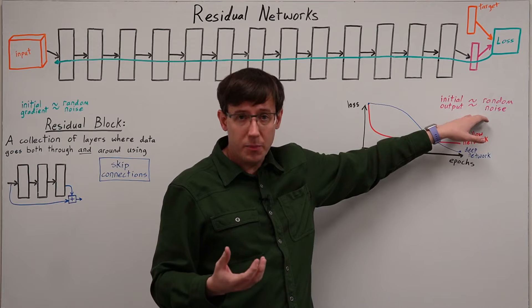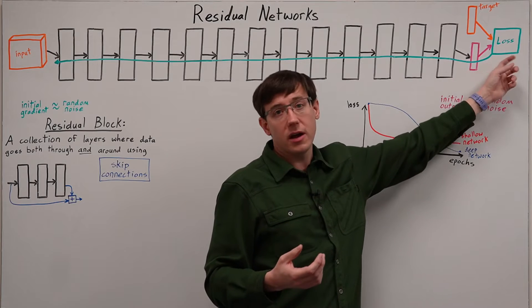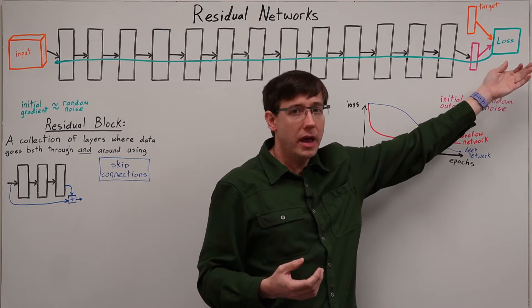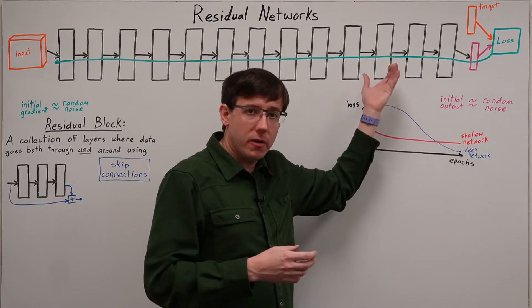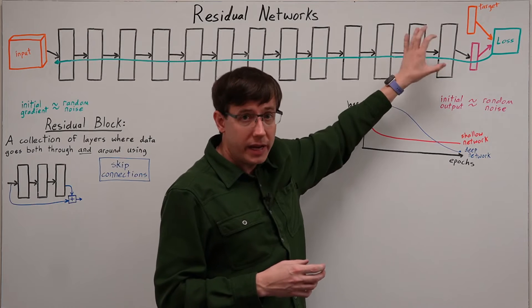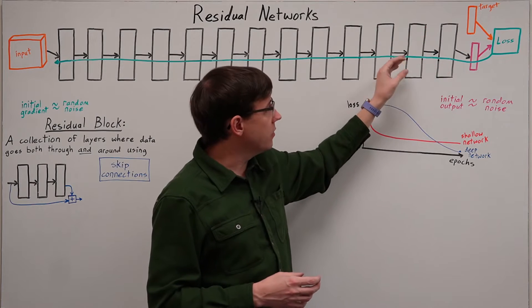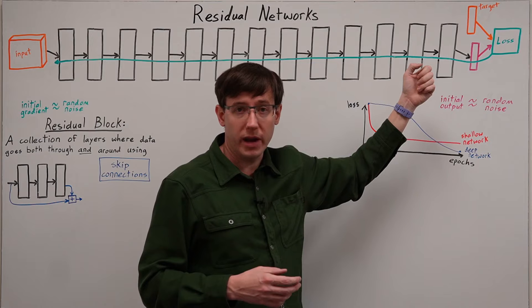Then when we perform an update, we'll compute the loss on that output and propagate it back through the network. But that loss may not be very informative at the layers late in the network, because their inputs were mostly random noise.